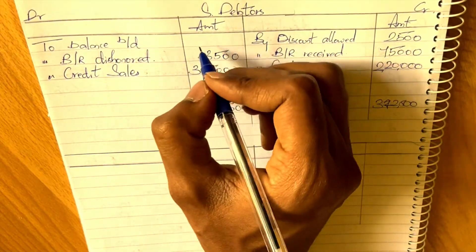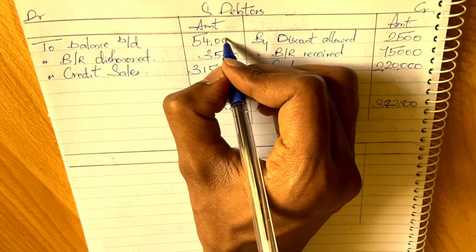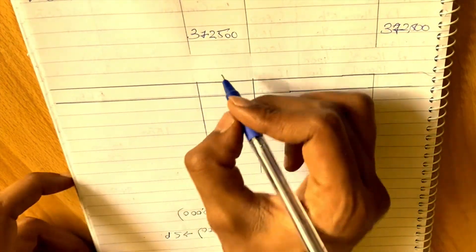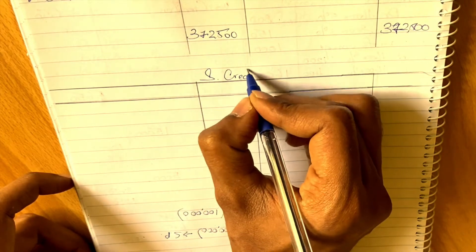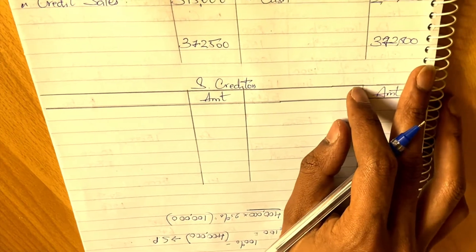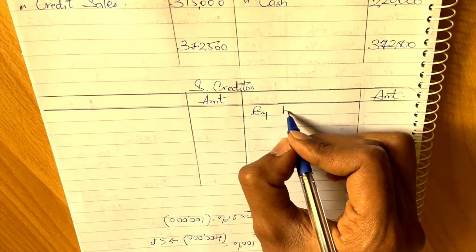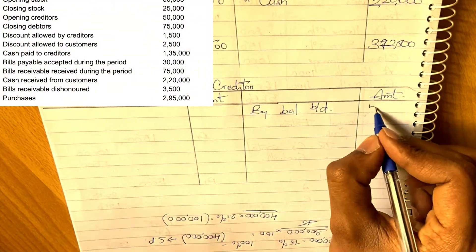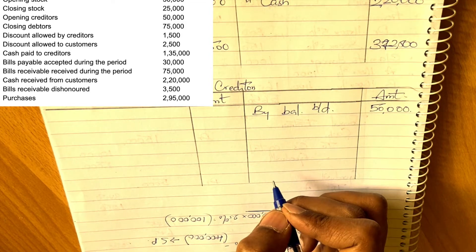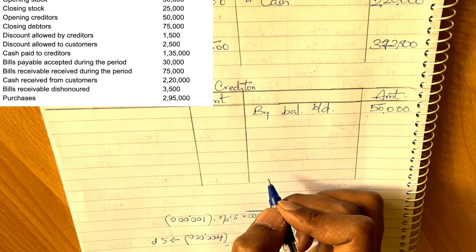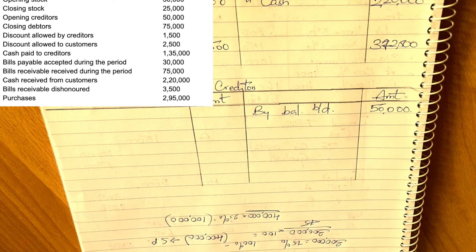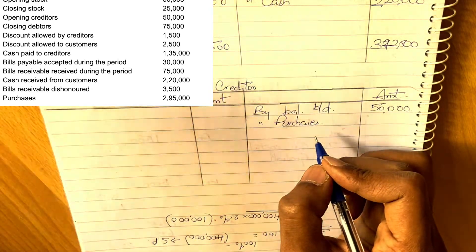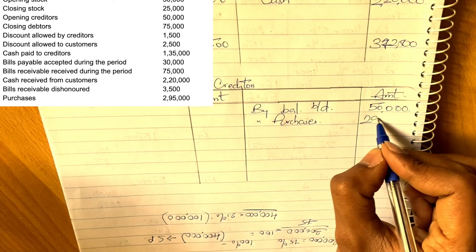Now moving to the creditors account. Creditors is a liability, so it will naturally have a credit balance. We write 'by balance brought down' — the closing creditors figure we need to find. When purchases are made, the creditors balance increases, so purchases of 2,95,000 appear on the credit side of the creditors account.